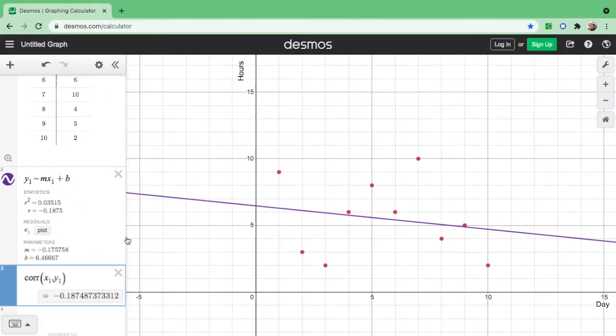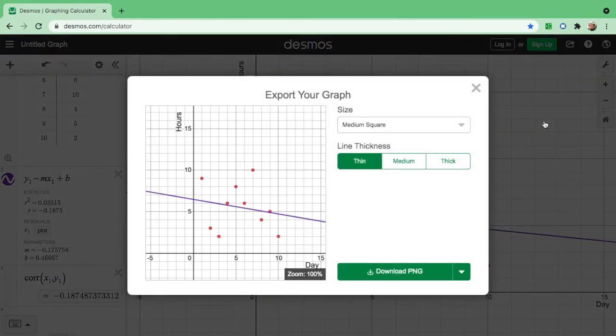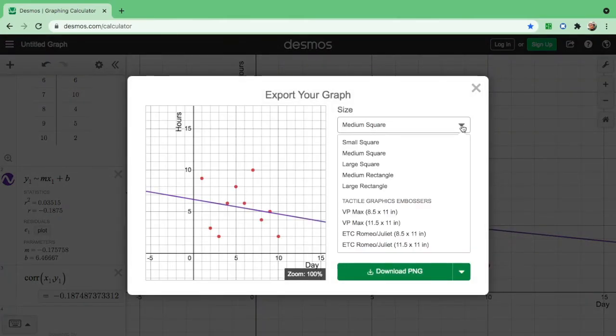So this is how we find the equation, the correlation, and the graph of this data. Now, if you will share this, just click the share graph. You can actually print it. You can actually export or embed or copy the link. But I want you to export it. And you can actually change the size of your graph.